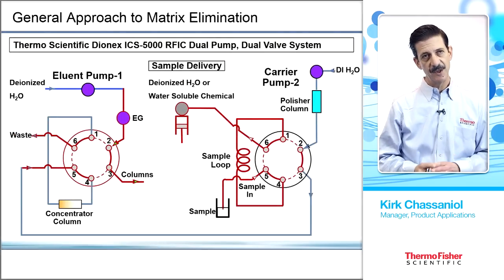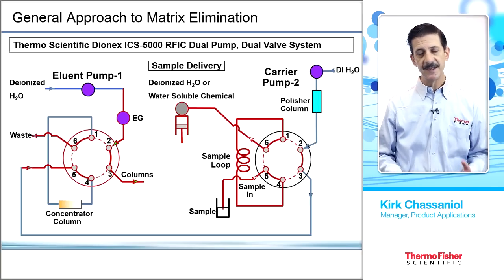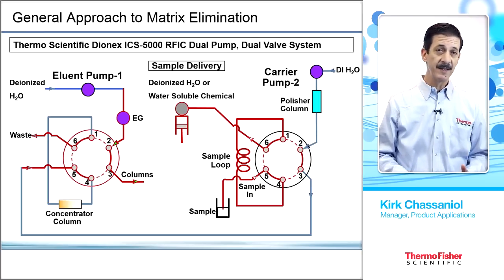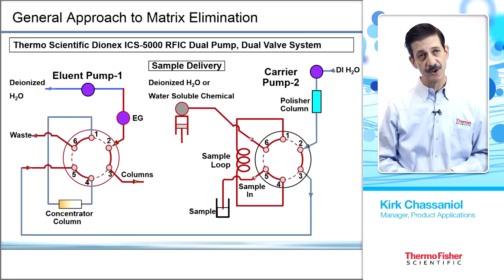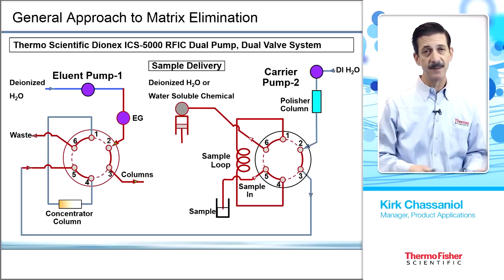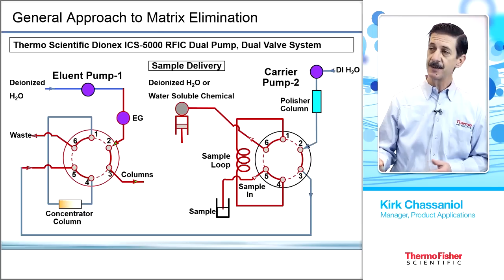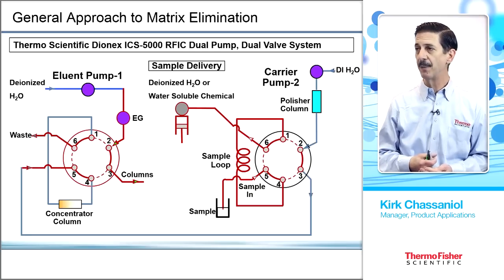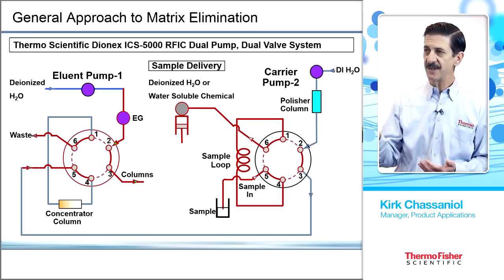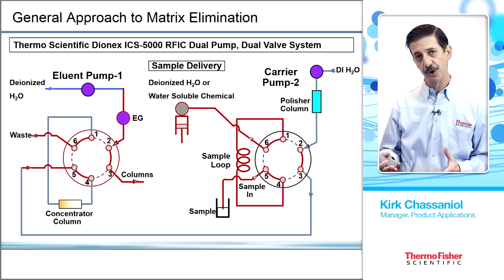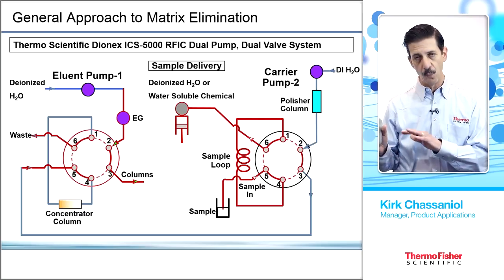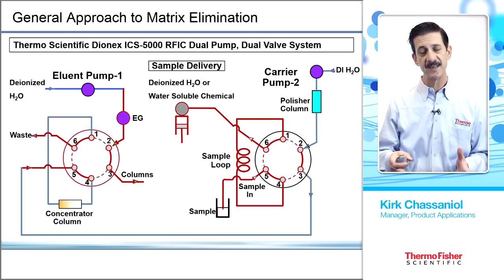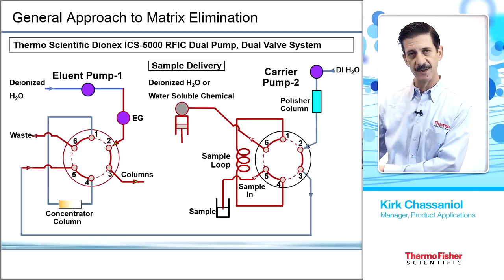The matrix elimination technique, which will also be discussed in the context of sample enrichment with combustion IC, is widely used in the semiconductor industry for determination of ions in various solvents and matrices that we may not want to inject directly onto the column. A large loop is filled with the sample, and a carrier pump displaces the sample from the large loop onto a concentrator column, which washes away the matrix or enriches the sample. This two-valve approach is used for matrix elimination regardless of whether it is coupled with a combustion sample preparation system.